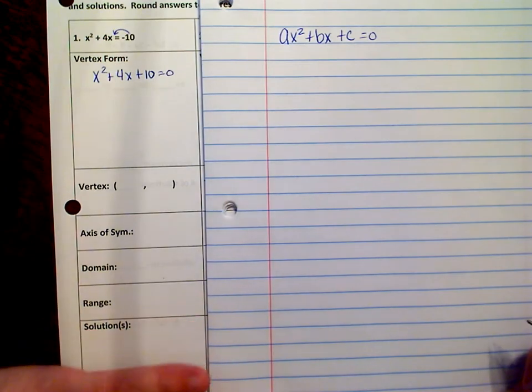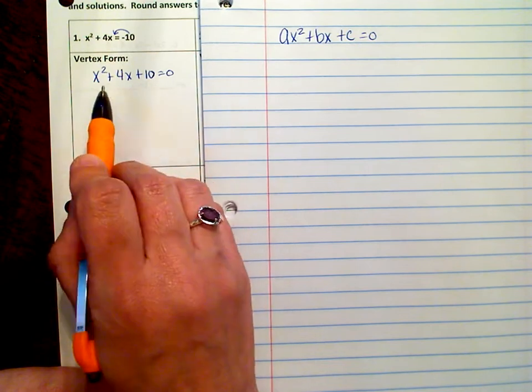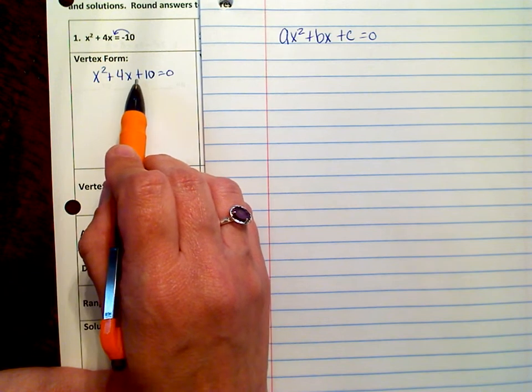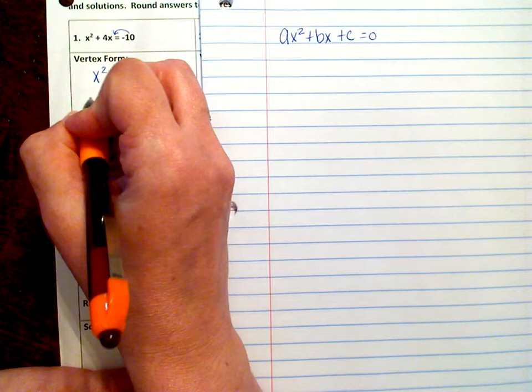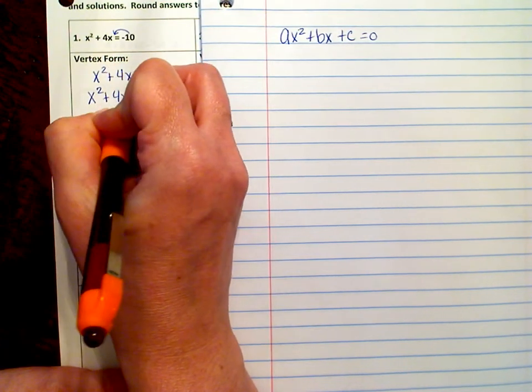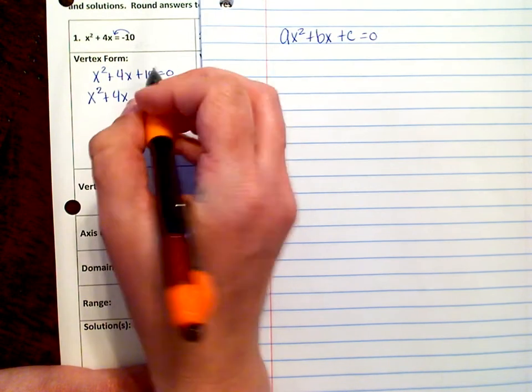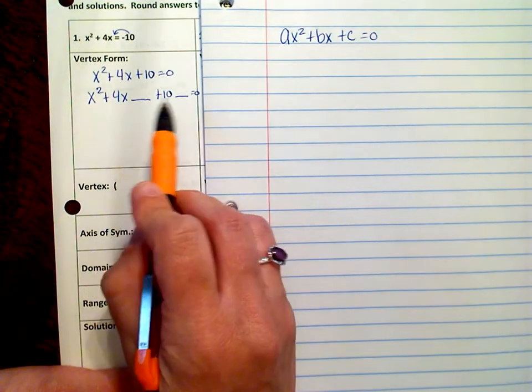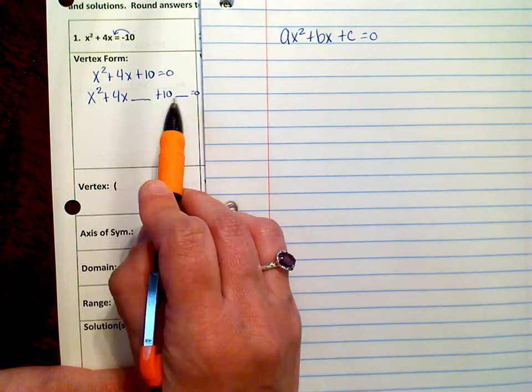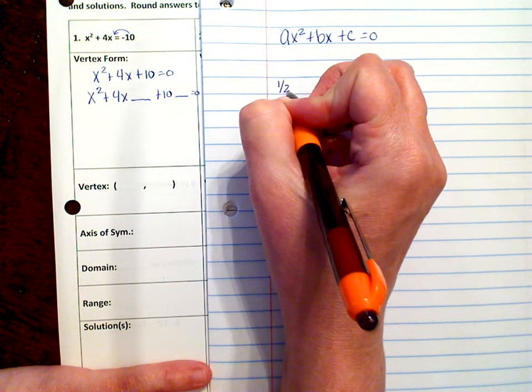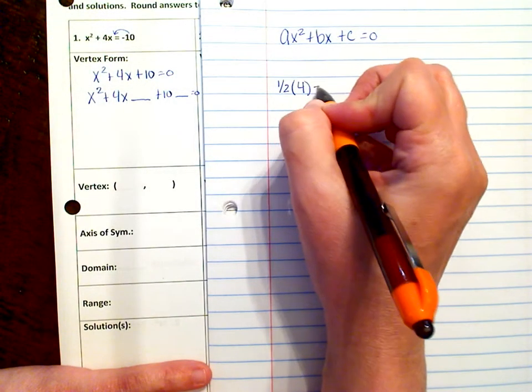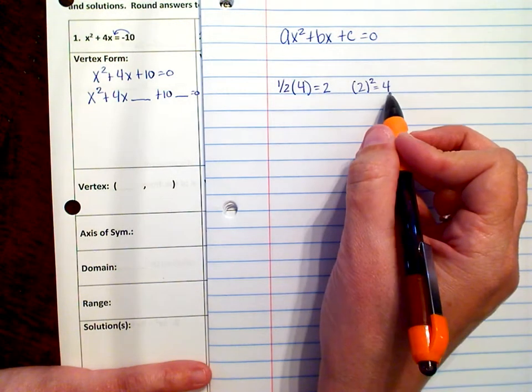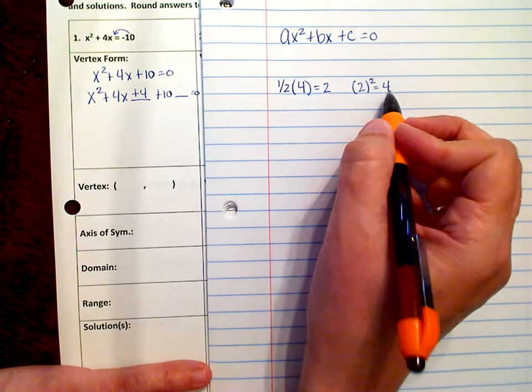And so now we're ready to complete the square. So to complete the square, remember that we're going to scoot this ten over, and we're going to create a spot in front of this term and behind this term. So we're going to have x squared plus 4x, and then we're going to put a blank, and then the plus ten, and then a blank. And we've got to figure out what's going to go in the blank. And remember, to figure this out, we take half, half of b. b is 4. So half of 4 gives us 2. And then we square that. 2 squared gives us 4. And so in the first blank, we put positive 4. In the second blank, we put negative 4.